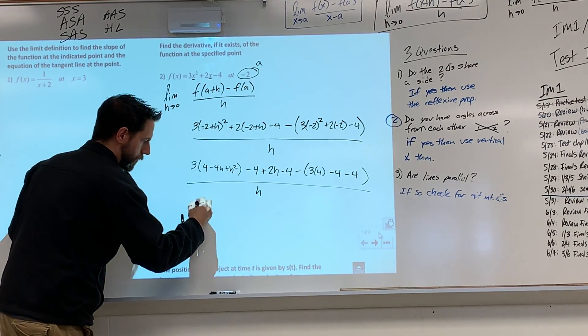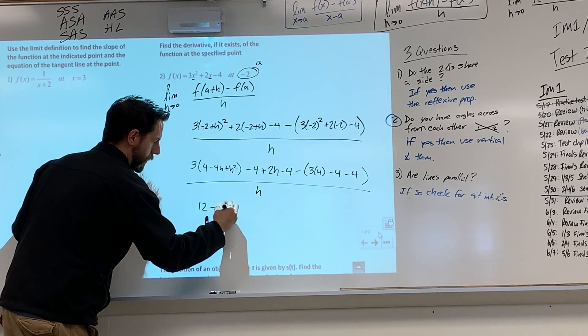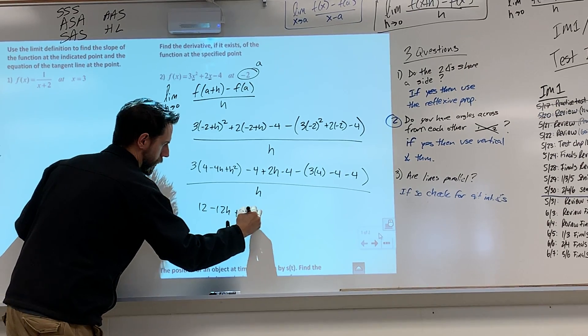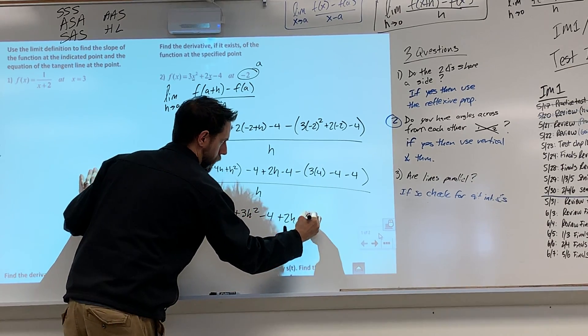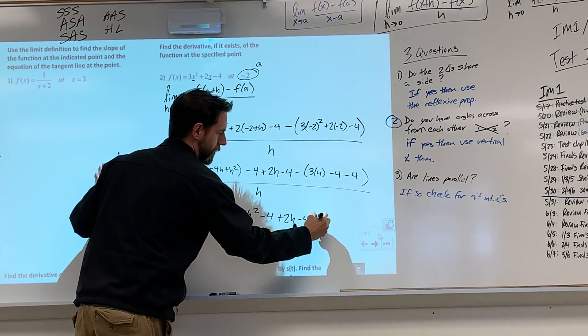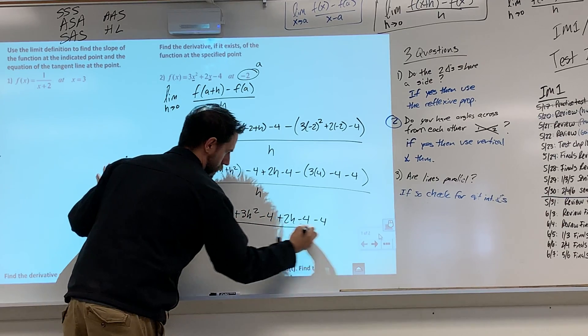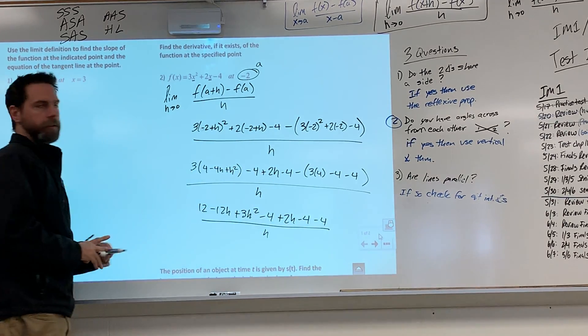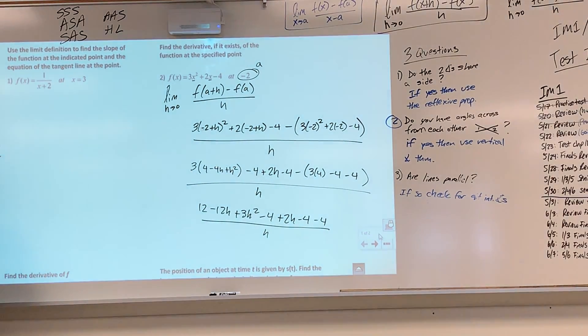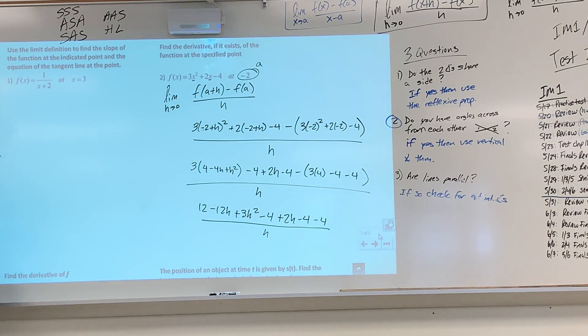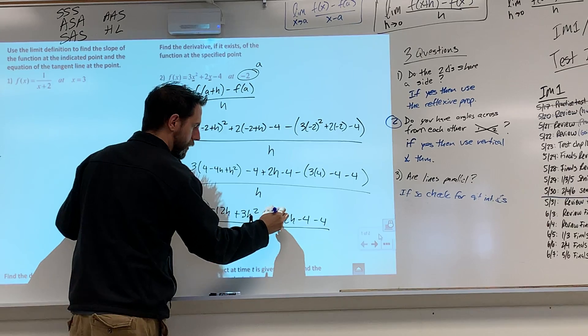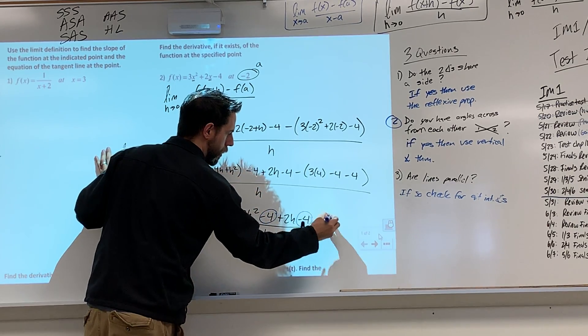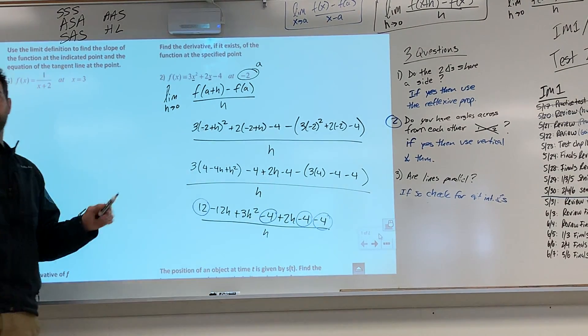Okay, let's distribute through. So this is 12 minus 12h plus 3h squared minus 4 plus 2h minus 4. So this leaves a lot of room guys for error. You need to take your time when you're doing these questions so that you don't make a mistake because you distributed incorrectly.